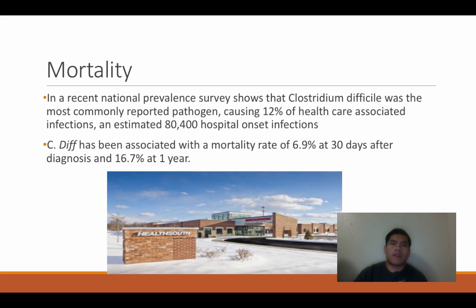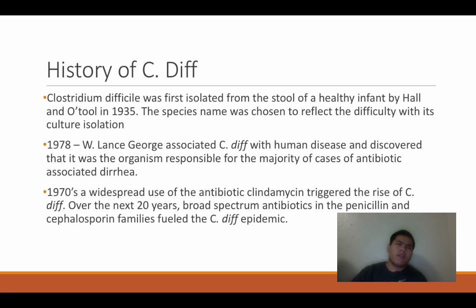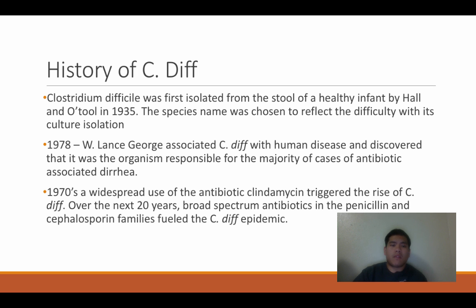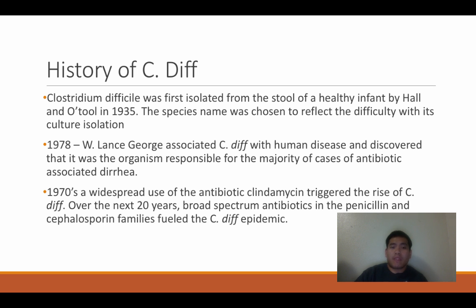The history of C. diff: it was first isolated in the stool of a healthy infant by Hall and O'Toole in 1935. The species name was chosen to reflect the difficulty of its culture isolation. It wasn't until 1978 that it was associated with human disease and discovered as the organism responsible for the majority of antibiotic-associated diarrhea cases. In the 1970s, widespread use of antibiotics — mainly clindamycin — triggered the rise of C. diff, followed by broad-spectrum penicillin and cephalosporin use that fueled the epidemic.